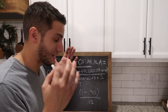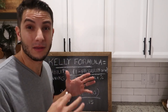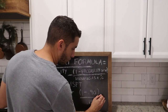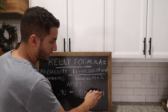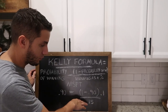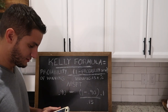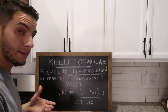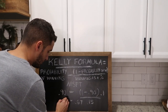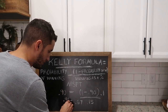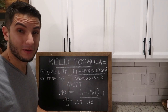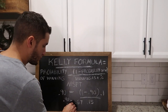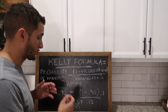The equation is: 0.90 minus (1 minus 0.90) divided by 0.15. This tells us what percentage of our capital we should invest into Microsoft. So 1 minus 0.9 is 0.1. Now we divide 0.1 by 0.15, which gives us 0.67. Then we subtract: 0.9 minus 0.67 equals 23%. So 23% of my available capital should go into Microsoft.